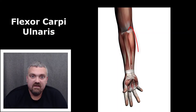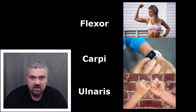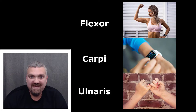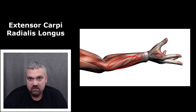When I think of flexors, I think of the flexor carpi ulnaris, which is going to flex the wrist — flexor carpi, carpus meaning wrist — on the ulnar or pinky finger side of the forearm. When I think of extensors, I think of extensor carpi radialis longus.